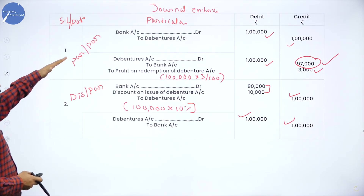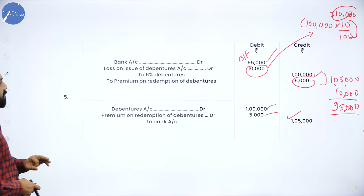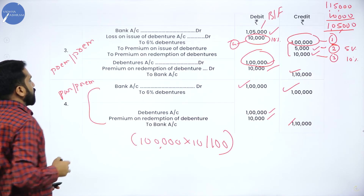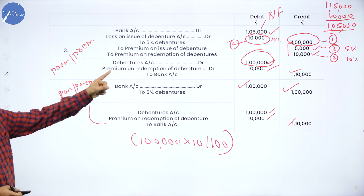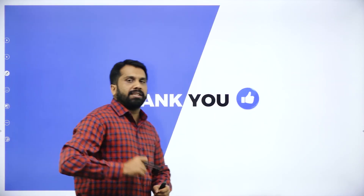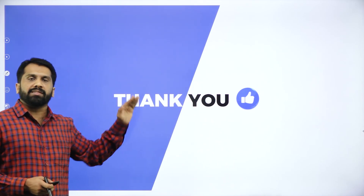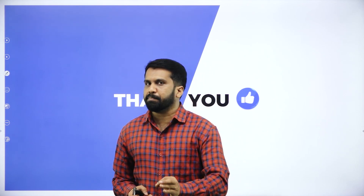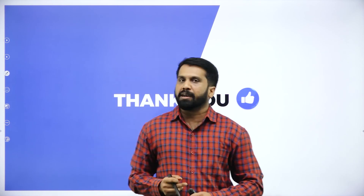Let us revise once. First one: par and par. Second: discount and par. Third: premium and premium. Fourth: par with premium. Fifth: discount with premium. Take screenshots of these working notes. This is all about today's session — we worked out one 12-marks problem. Try to remember all the journal entries with calculations. Out of five entries, one or two will be a little complicated; the rest are simple because the numbers and percentages are given in the question itself. In the next session, we will come up with one more 12-marks problem from your previous year question paper. Thank you.